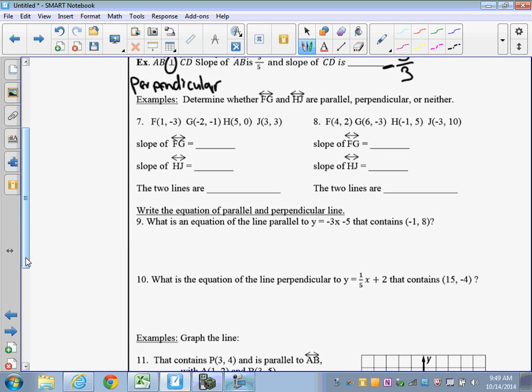The numbers 7 and 8, we need to determine whether line FG and line HJ are parallel, perpendicular, or neither. So remember, when they're parallel, the slopes are going to be the same. When they're perpendicular, they're going to be opposite reciprocals, and whenever they're neither, they're not going to be the same or opposite reciprocals. So let's solve this. We have to define the slope of FG and the slope of HJ. So remember, the slope was X1 minus X2 over Y1 minus Y2.